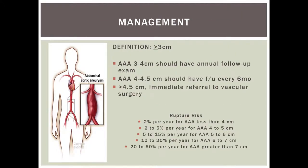The definition of a AAA is an abdominal aortic aneurysm greater than or equal to three centimeters. If it's between three and four centimeters, the patient should have annual follow-up. If it's between four and 4.5 centimeters, they should be followed every six months with serial ultrasounds or CT scans. If it's greater than 4.5 centimeters, they need an urgent referral to vascular surgery. If it's bigger than 5.5 centimeters, they usually need immediate surgery, especially if symptomatic. Mortality and rupture risk increase as the size of the AAA grows.